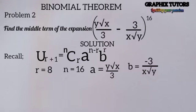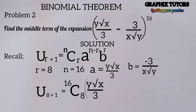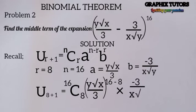Now we input the parameters into the formula. We have U subscript (8+1) equals 16 combination 8, multiplied by a — which is y root x over 3 — to the power of n minus r, which is 16 minus 8 = 8, multiplied by b — which is minus 3 over x root y — also to the power of 8.